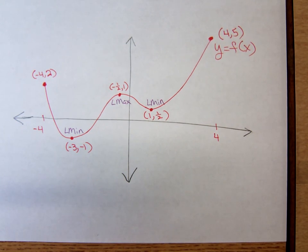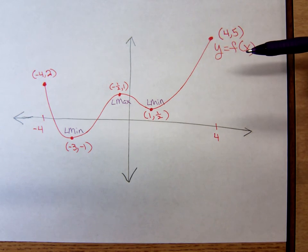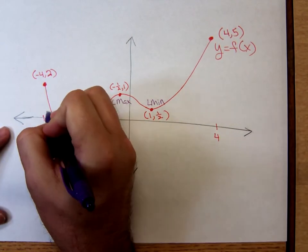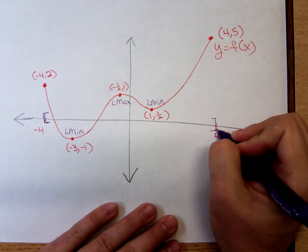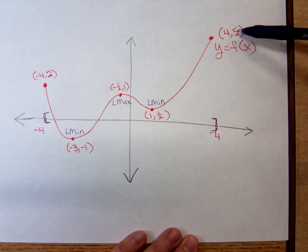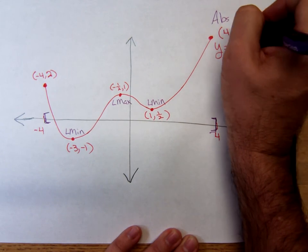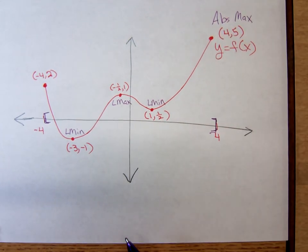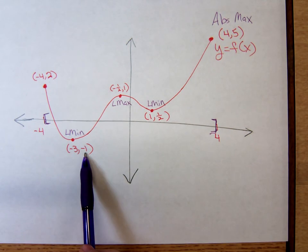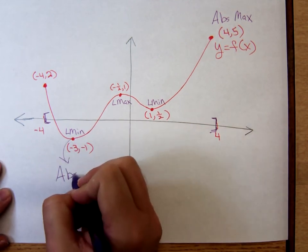We have absolute extrema as well. The absolute maximum is the absolutely largest y-coordinate on the graph. We're looking just at a closed interval from negative 4 to positive 4. The y-coordinate that is absolutely the largest occurs at the right endpoint, and that value is 5 — so there we have an absolute max. For the absolute minimum, it occurs at that low point where the absolutely smallest y-coordinate on this graph is negative 1. So at the location of that local minimum, we also have our absolute minimum.